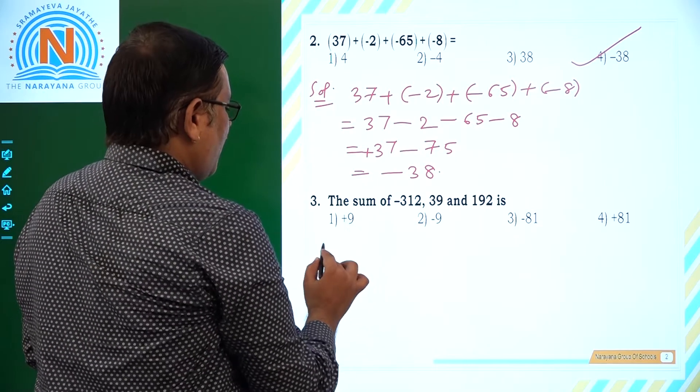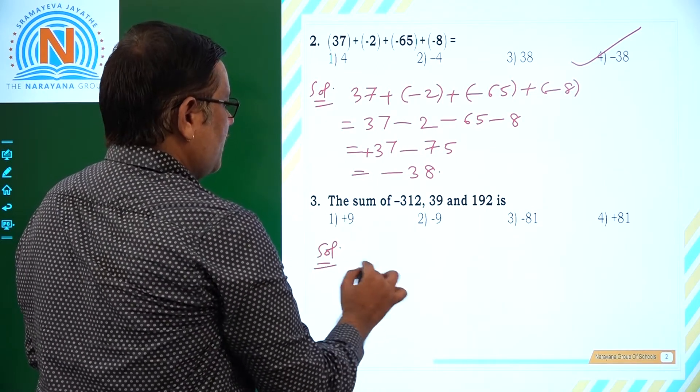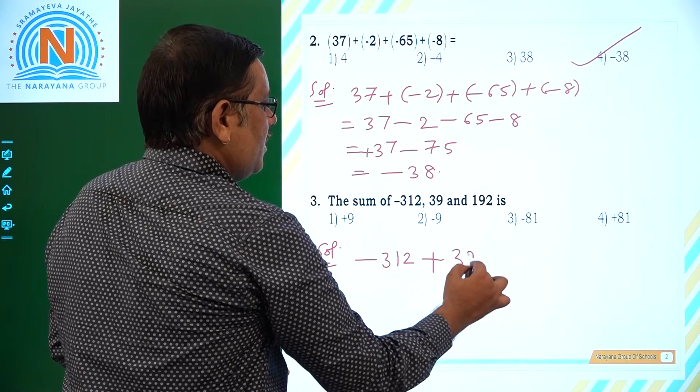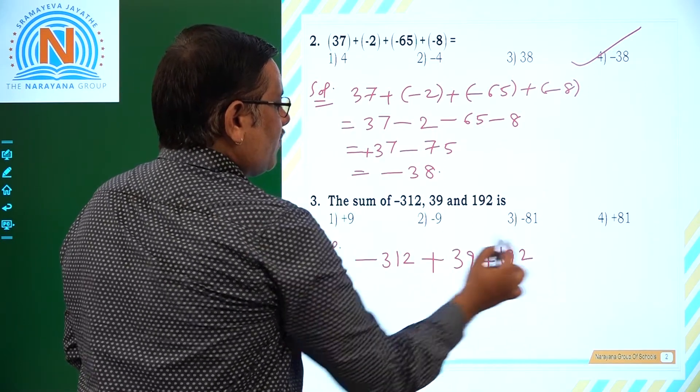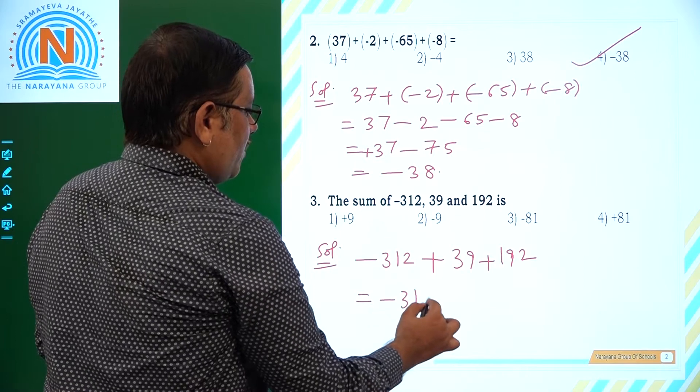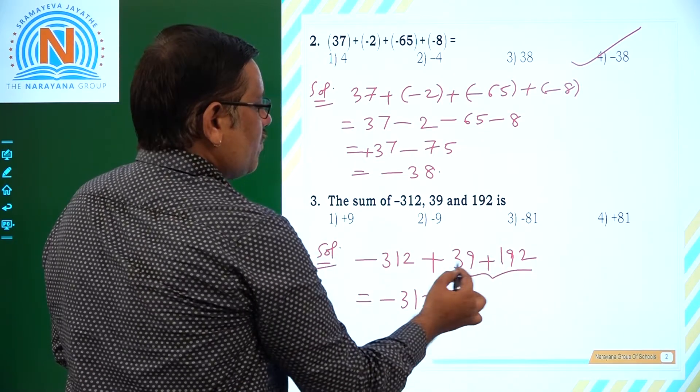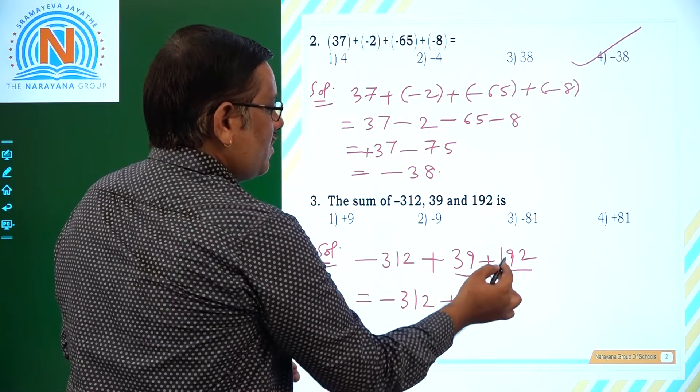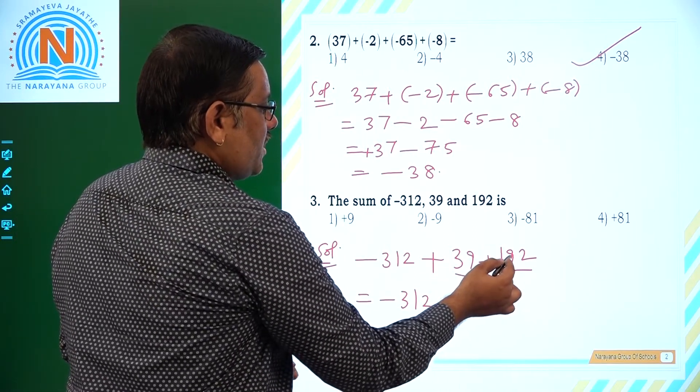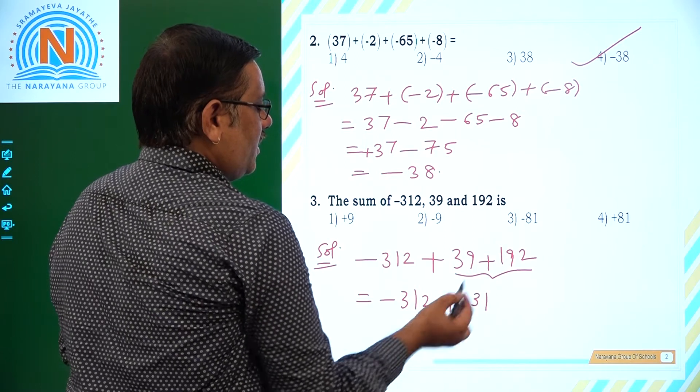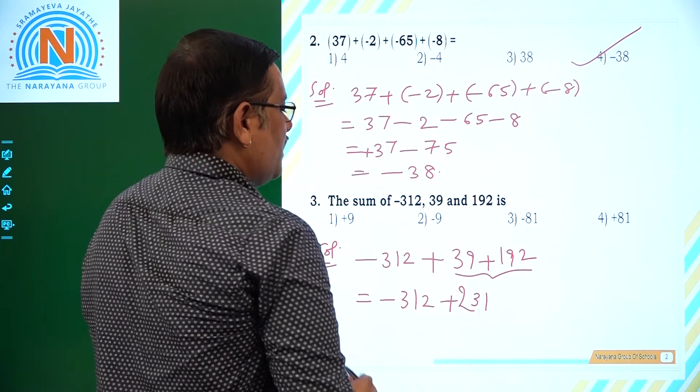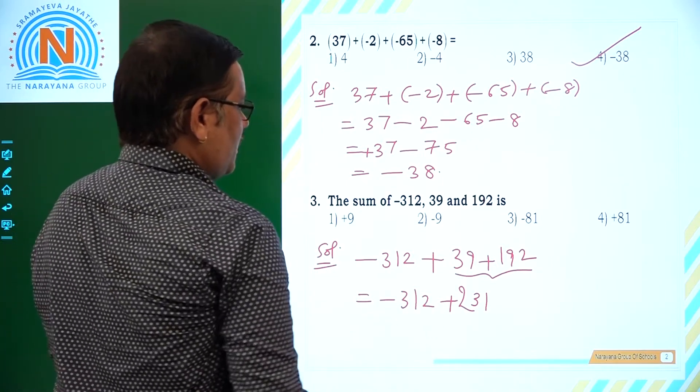Here you see, the sum of, sum in the sense plus -312. We have to add +39 + 192. That is -312 plus sum of these two, because both are positive. We can add up with the same sign. 2 plus 9 is 11. 1 plus 9 is 10. 10 plus 3 is 13. So that is 231. 231 is the sum of this.